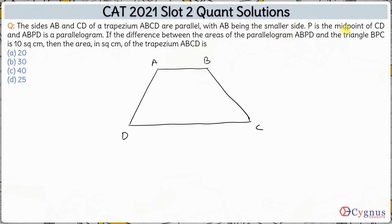Now P is a point, the midpoint of CD. This is point P here. P is the midpoint of CD and ABPD is a parallelogram. So ABPD becomes a parallelogram. That means this side is parallel to this side and this side is parallel to this side.